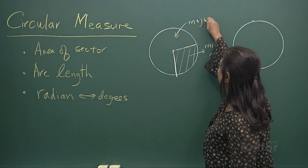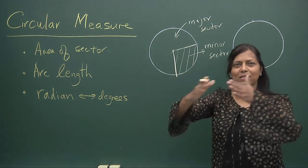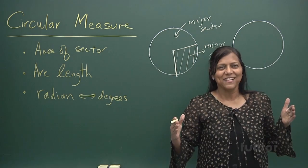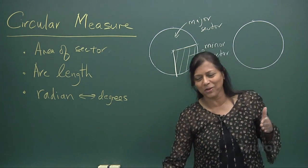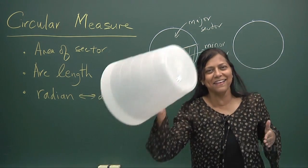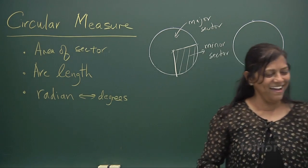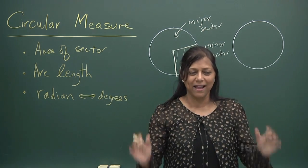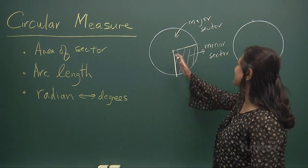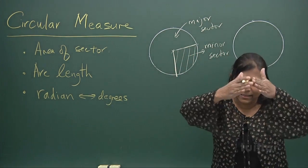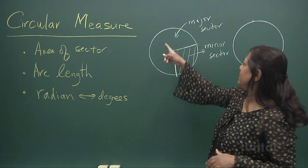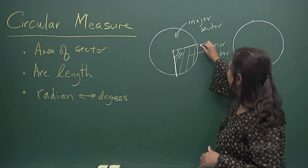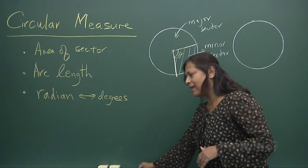Now, a sector has got an angle made by two radii. Sometimes you've got to play with objects and make maths more alive. This is a sector, and the sector is bounded by the radius — both radii — this angle theta, and the arc length.